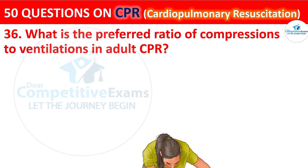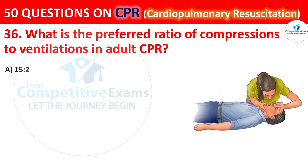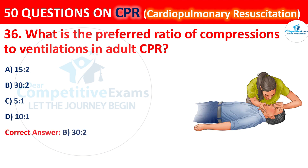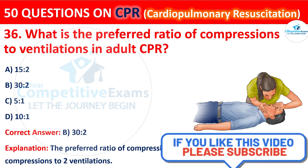Question 35: What is the preferred ratio of compressions to ventilations in adult CPR? The options are: 15:2, 30:2, 5:1, or 10:1. The correct answer is B — 30:2. The preferred ratio of compressions to ventilations in adult CPR is 30 compressions to 2 ventilations.